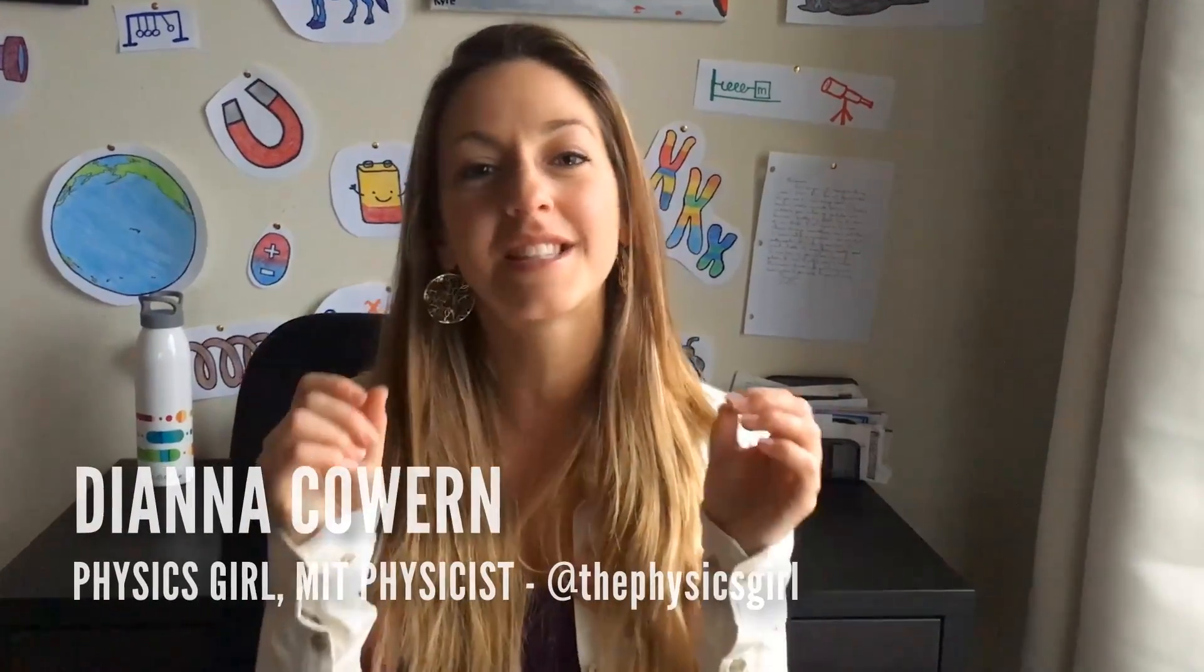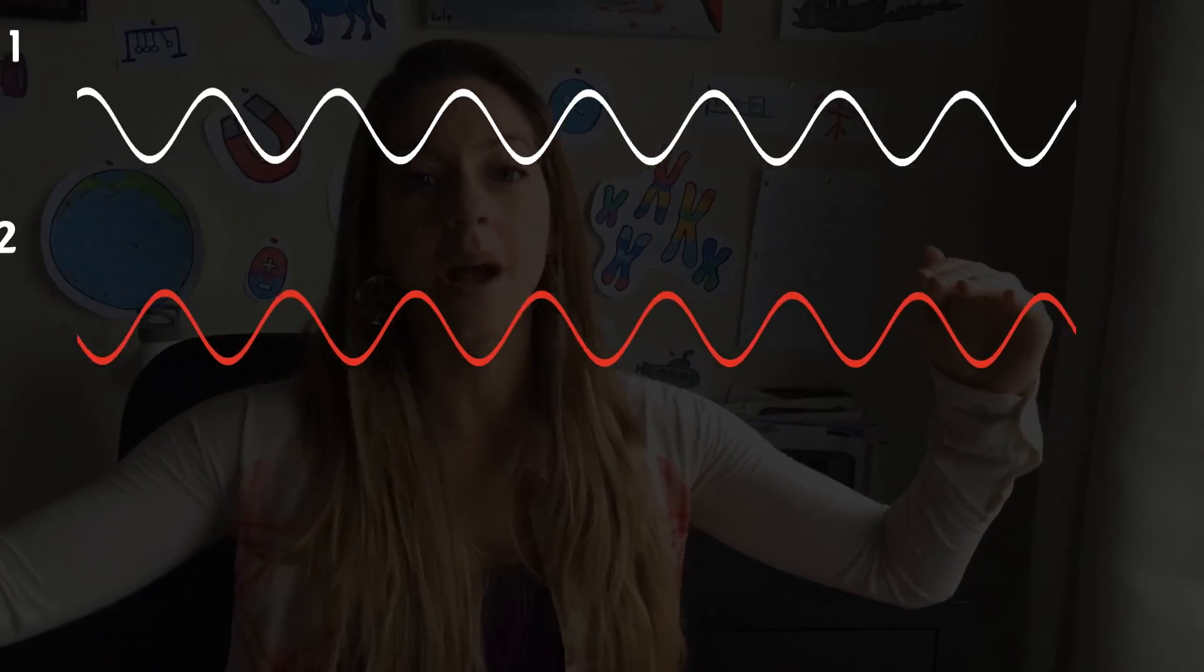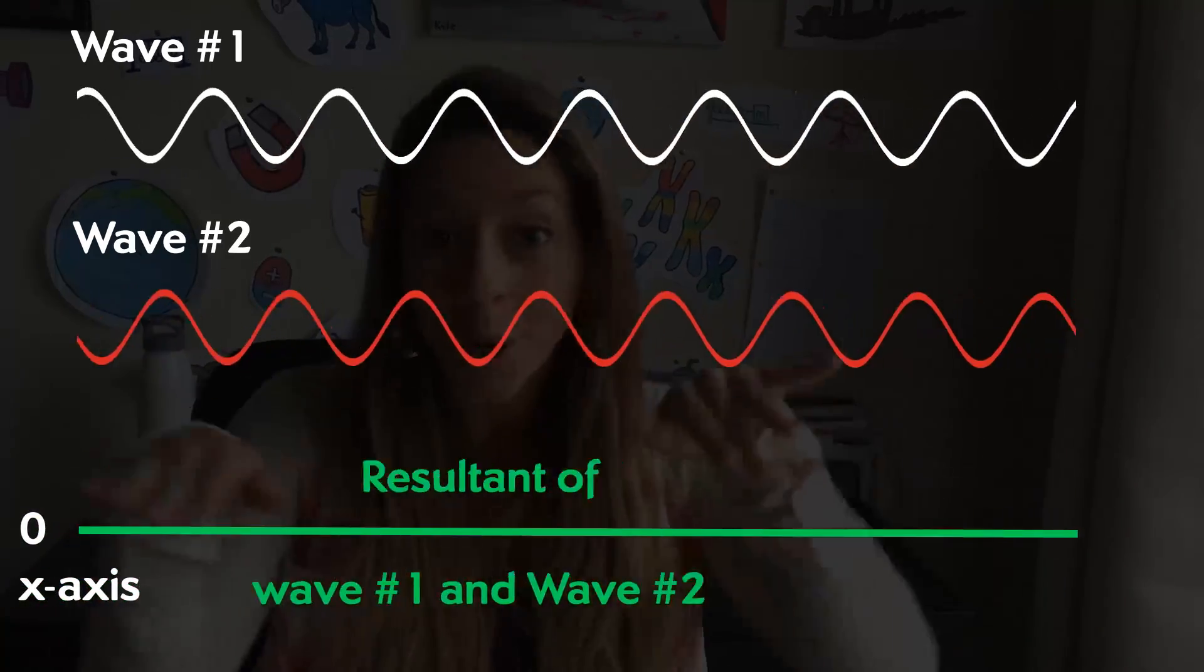Hi, I'm Diana coming at you from Physics Girl, and I'm going to explain destructive interference as requested by Scientifically Explained. So there's this phenomenon in the world where two waves can be coming at each other from different directions and they can cancel to zero when they meet. That's called destructive interference.